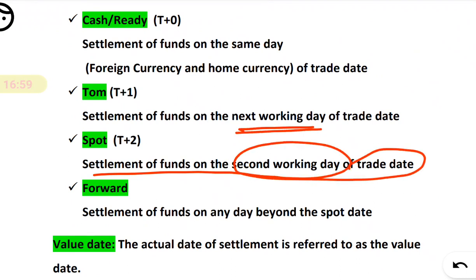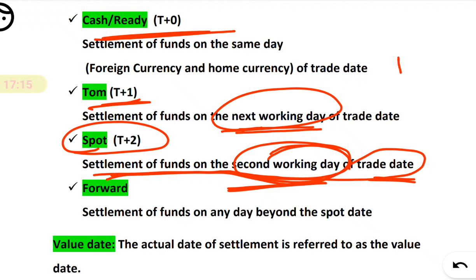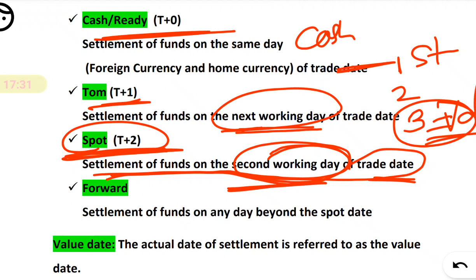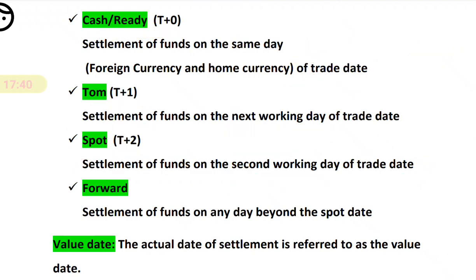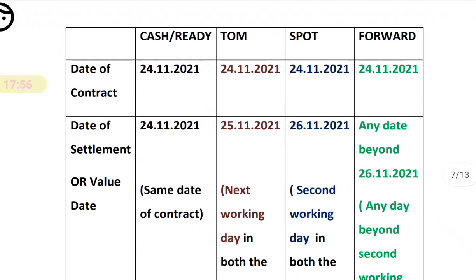Now what is spot? Settlement will be on the second working day of the trade. Cash means same day, TOM means next day, and spot means day after tomorrow — the second working day. For example, if you entered the contract on the 1st, the next working day is the 2nd, and the second working day is the 3rd — so on the 3rd you complete the transaction, making the 3rd your value date. That is called spot. Any transaction settled beyond spot — beyond T+2 — is referred to as a forward transaction.